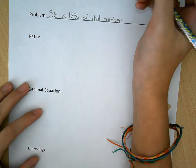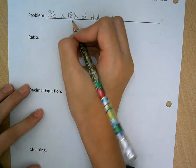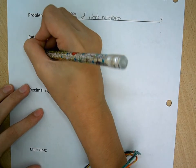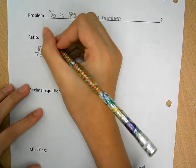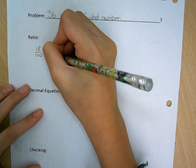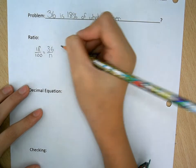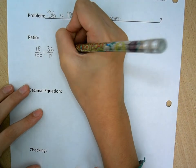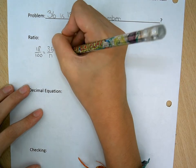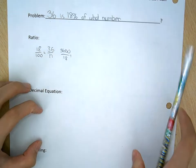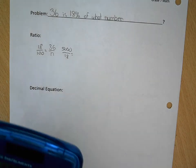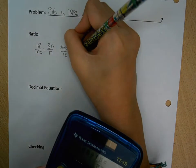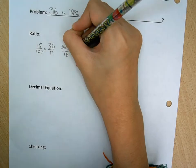So the ratio would be 18 over 100 equals 36 over N, so these fractions. So I solved this. 3600 over 18 equals, wait, it's a calculator. So that's the answer, and it's quite close to 175.